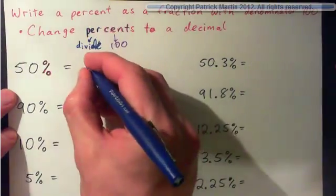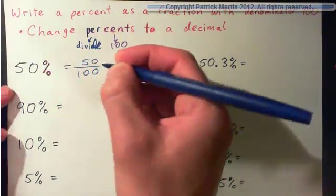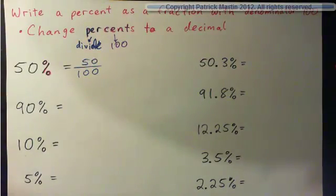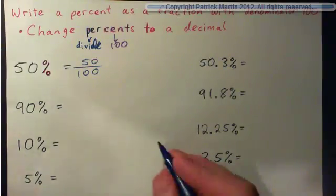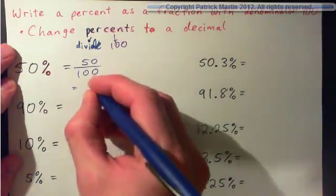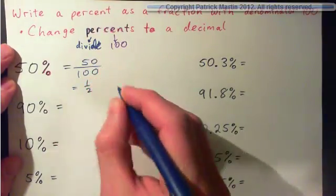So 50% means 50 per 100, 50 out of 100. If 50% of students take a math class, that means 50 out of 100, 50 out of every 100 students take a math class. If 50% of people are female, that means 50 out of every 100 are female. And of course, if you simplify this, you get a half. 50% is a half.